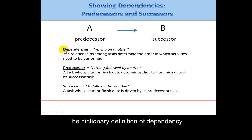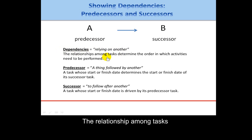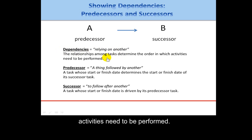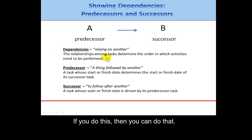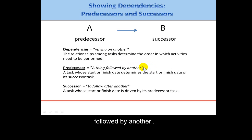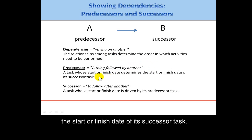The dictionary definition of dependencies is relying on another. The relationship among tasks determines the order in which activities need to be performed — it's a form of logic: if you do this, then you can do that. The predecessor is a task whose start or finish date determines the start or finish date of its successor task.